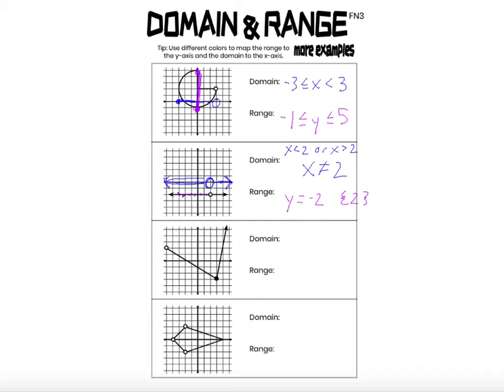Moving on to the third graph. The boundary point for the domain is x equals negative 5 — negative 5 is not in the domain, but there's no x-coordinate less than negative 5. Moving to the right, x can be anything bigger than negative 5: negative 4, negative 3, negative 2, negative 1, 0 — keep moving.